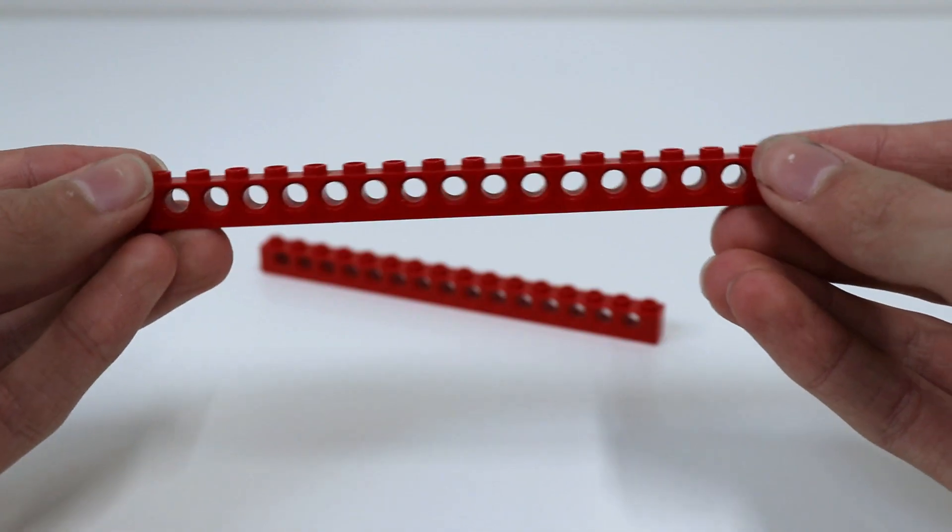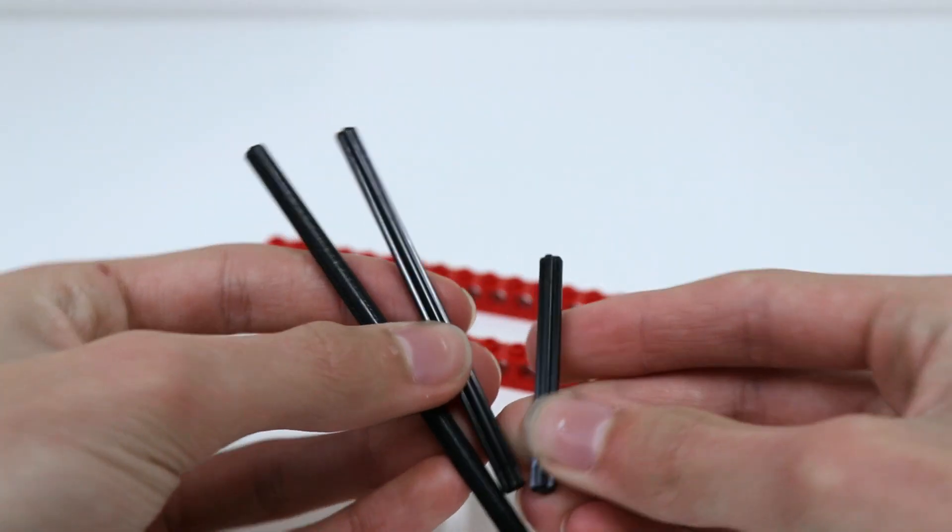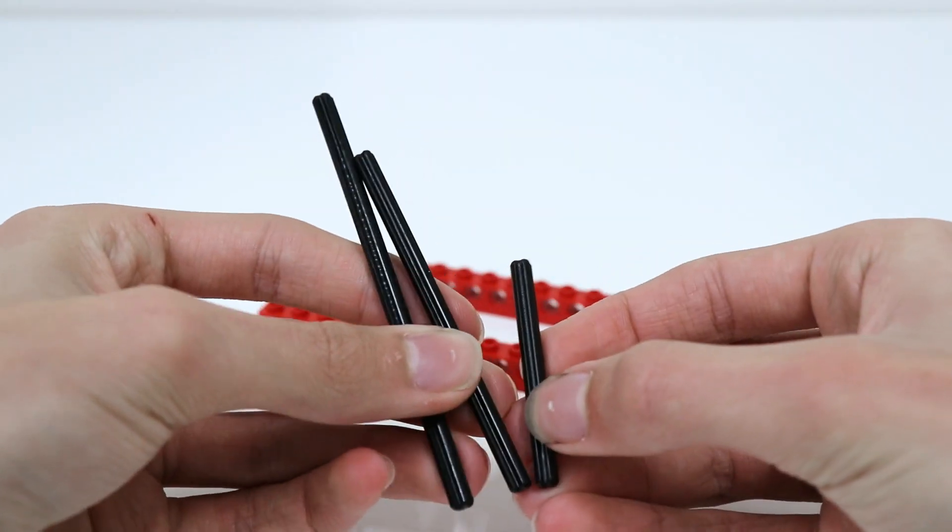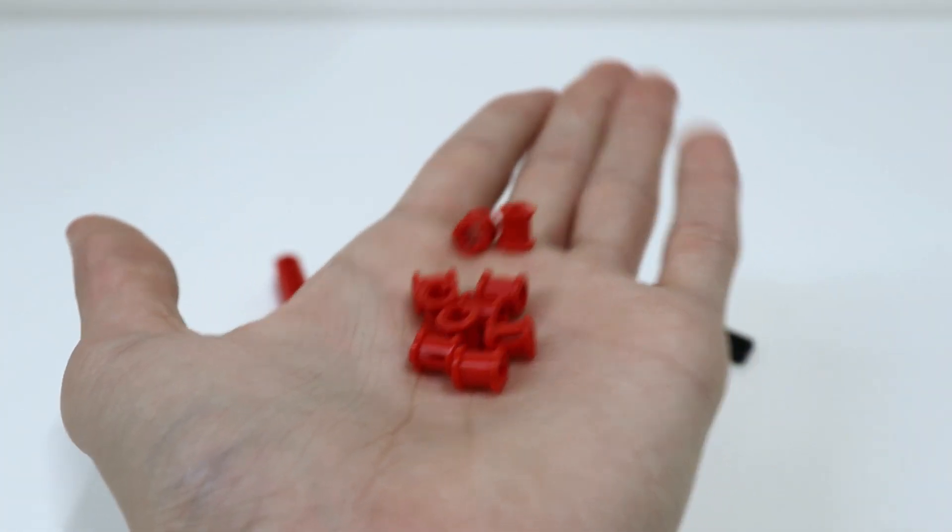Alright, so we're going to start with two 1x16 Technic bricks and three Technic axles. One short one and two longer ones. And we will also need a bunch of these little Technic axle stoppers.